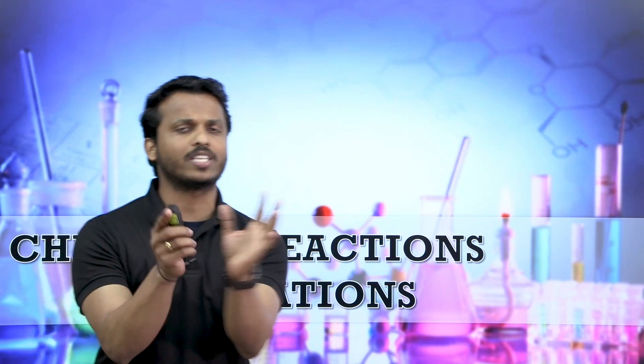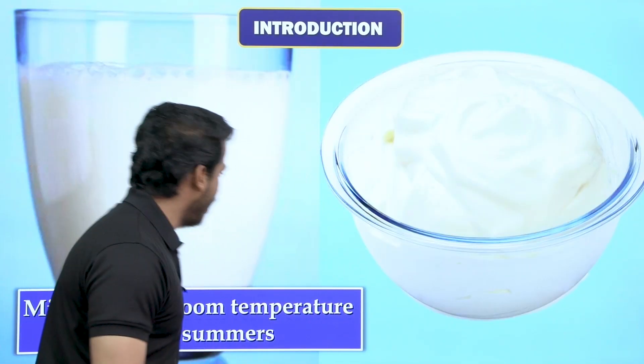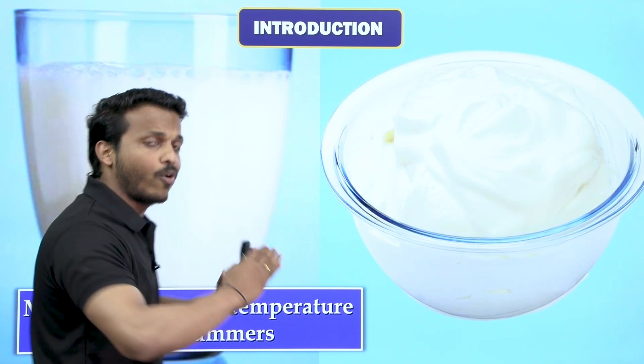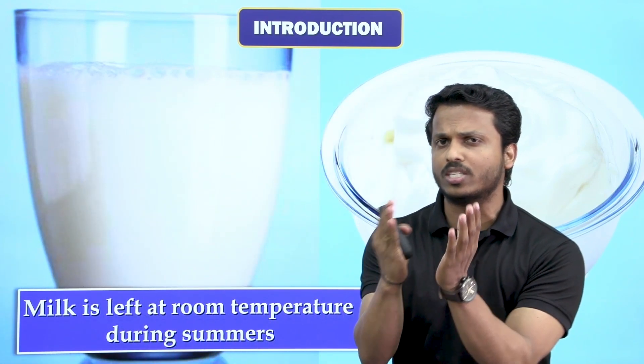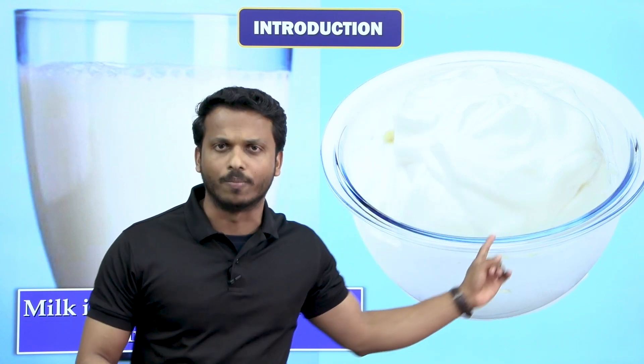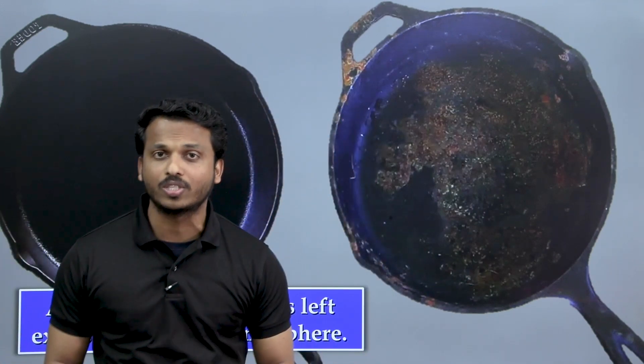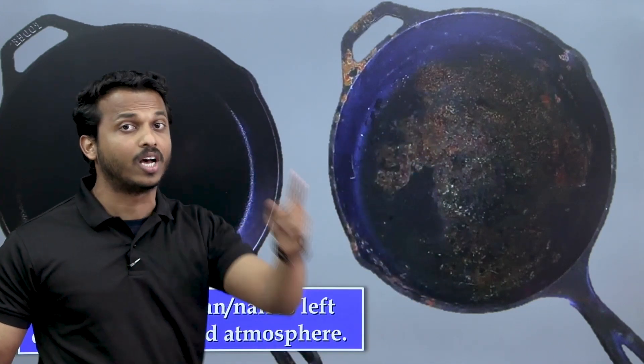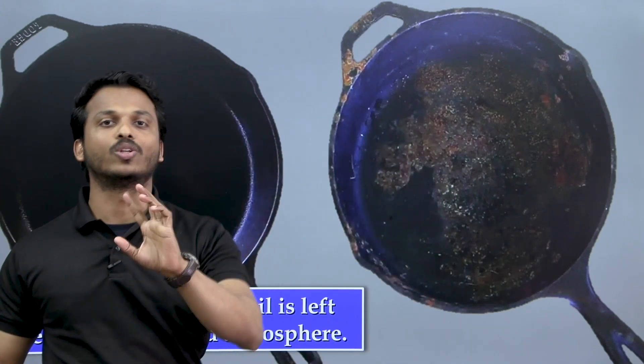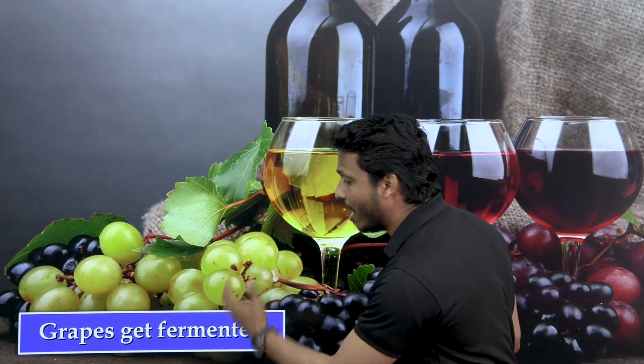Let me show you some changes happening in our nature. You see raw milk — when kept for a long time in the atmosphere, some changes happen and it gets converted into a different form. Another example: a frying pan made of iron, if kept in the atmosphere for a long time, reacts with atmospheric oxygen and changes — that is called rusting of iron.